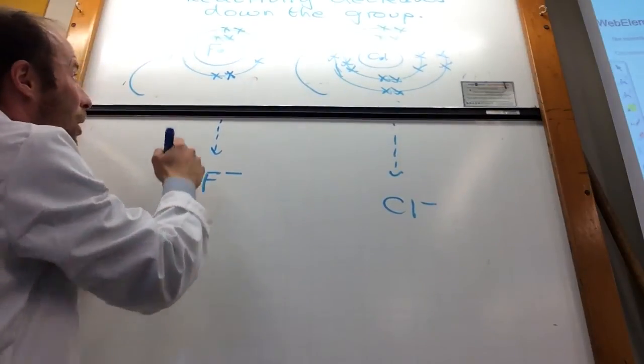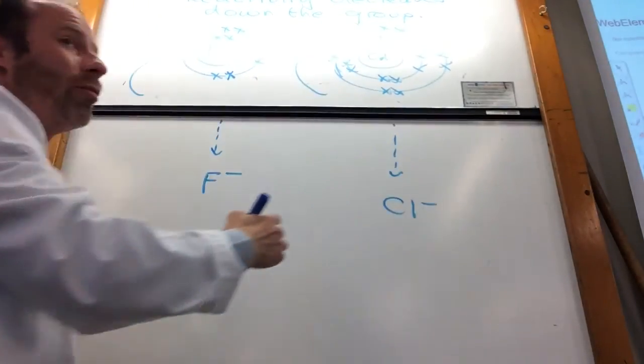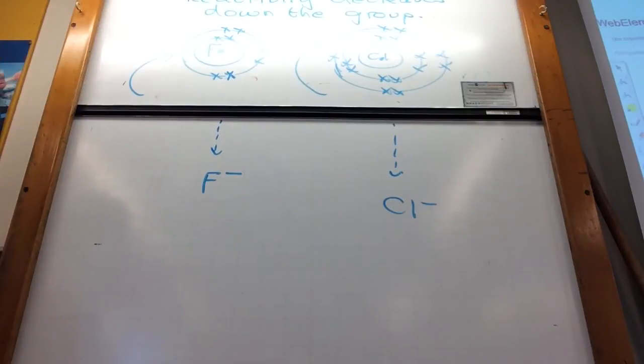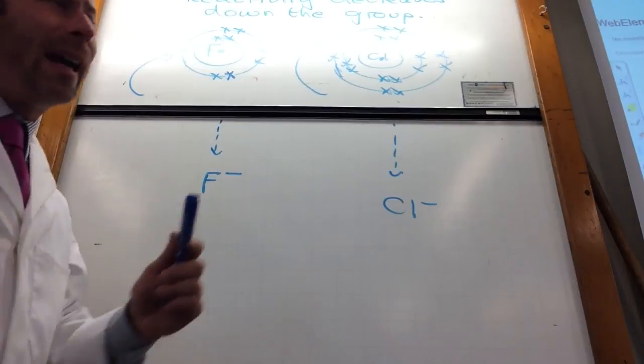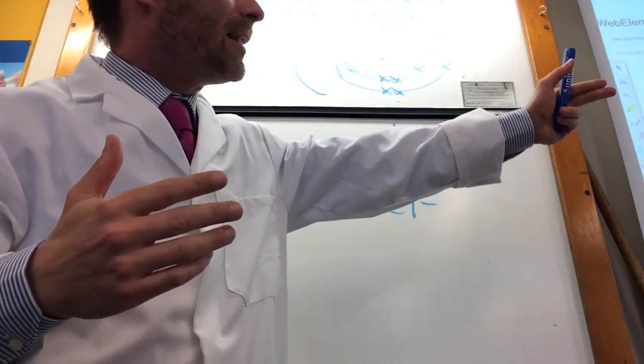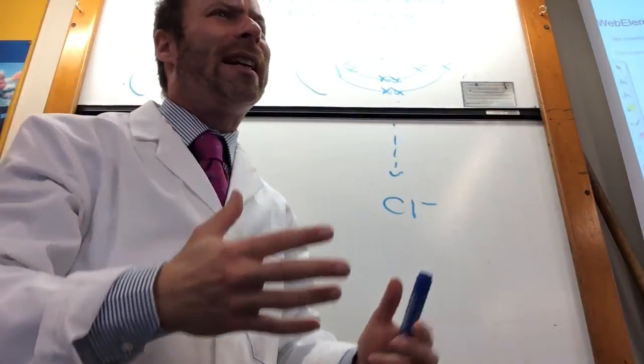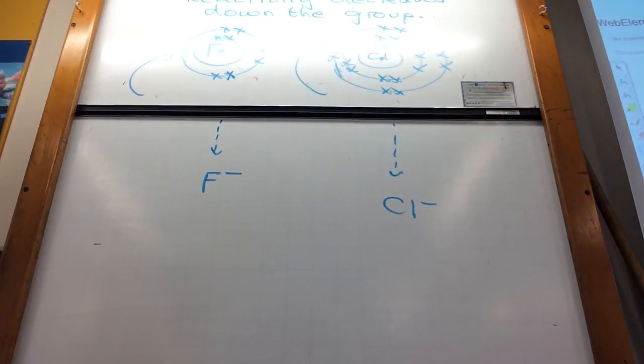Fluorine is the most reactive, followed by chlorine. And then they come into a shell further and further away. You've got to make sure, because sometimes they'll ask you to compare reactivities with alkaline metals and halogens. You've got to be really careful which one you're talking about for that one.